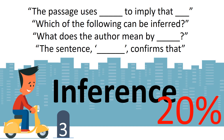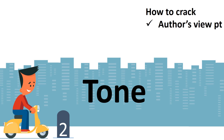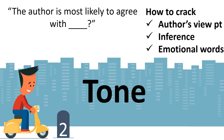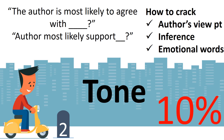At number two is tone of the passage, again a very common question. To crack it, you need to understand the author's viewpoint, have an inference of the topic, and look at emotional words — whether the author's tone is very acerbic or very mellow, whether the author is bragging about things. The question might look like: 'The author is most likely to agree with what?' or 'The author is most likely to support what?' along with the tone of the passage. Tone questions make up 10% of questions.